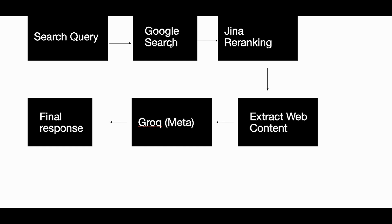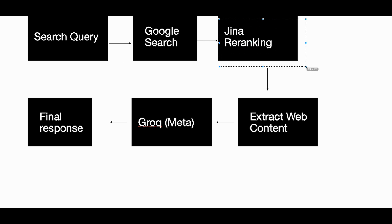Here I'm using SERP API to send my query to the Google Search API. Then, in order to rank how relevant search results are to the query, I'm using the Jina reranking model. A reranker is a model trained mainly for reranking your retrieval results — whether RAG or search results — to check which ones are relevant to the query and which ones are not, so we only grab relevant responses.